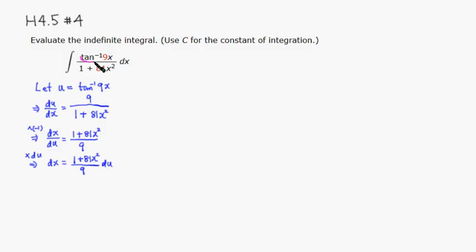All right, so let's rewrite that. Arc tangent of 9x, so this is gonna be our u. We can write it as integral u on top. And we have 1 plus 81x squared. And dx is 1 plus 81x squared on top over 9 times du. So luckily we can cancel 1 plus 81x squared on the bottom and top.